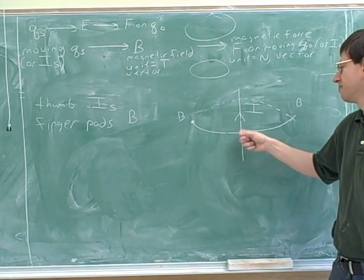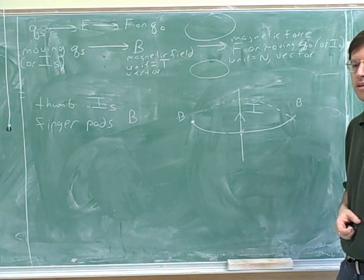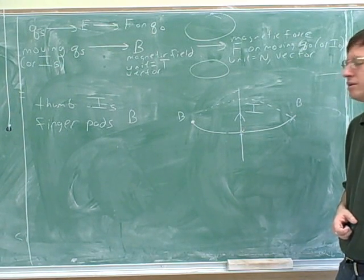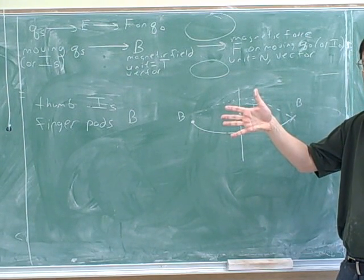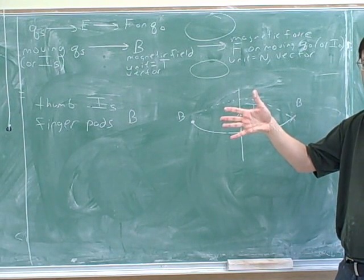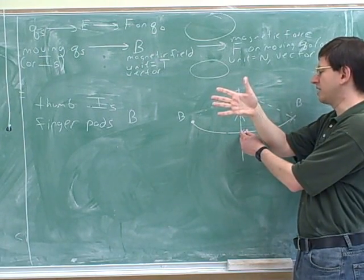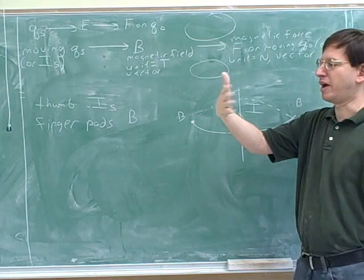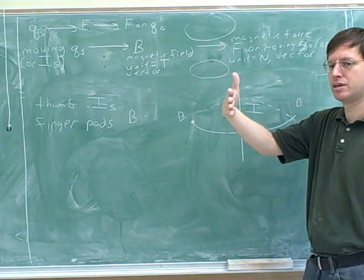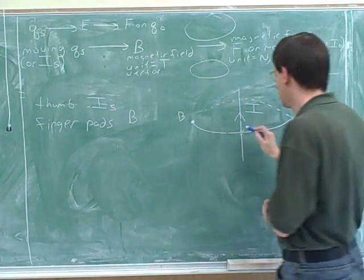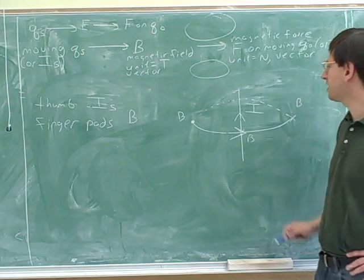This is the point on the loop that is closest to you. Okay, so eyes pointing up, your fingers are like this. This represents a point that is in front of the board, so I need to put my fingers in front of my thumb. Good. And then my finger pads are pointing to the right. So the direction of the magnetic field here is to the right.